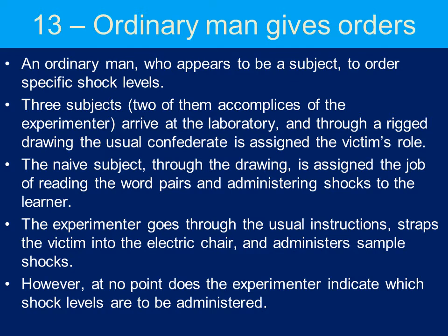The experimenter goes through the usual instructions, straps the victim into the electric chair, and gives the sample shock to the participant. However, at no point does the experimenter indicate which shock levels are going to be administered — so the experimenter never says to increase by 15 volts every single time the participant gets the word pairs wrong.